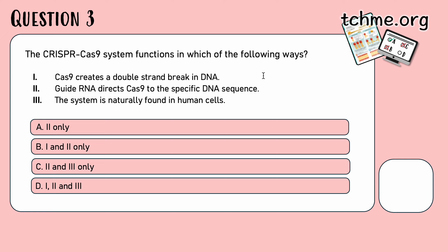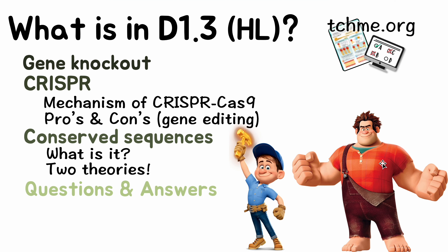One more question: in the CRISPR-Cas9 system, which of the following is true? One — Cas9 creates a double-stranded break in the DNA: true, that's another way of saying it cuts the DNA. Two — guide RNA directs Cas9 to the specific DNA sequence: true, the guide RNA is like the brain directing the scissors. Three — the system is naturally found in human cells: no, it's found in bacterial cells. The two female scientists copied the bacterial mechanism to use in humans. So the answer is one and two — answer B. I really hope that was useful and I will see you guys in the next one.